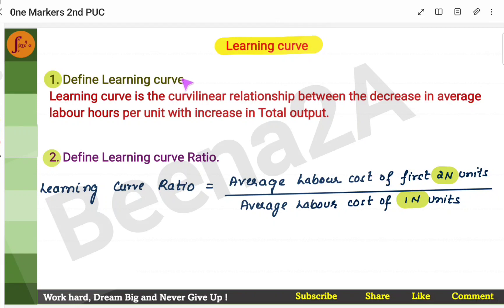First one is define learning curve. We will have to remember this particular definition. Learning curve is the curvilinear relationship between the decrease in average labor hours per unit with increase in total output.